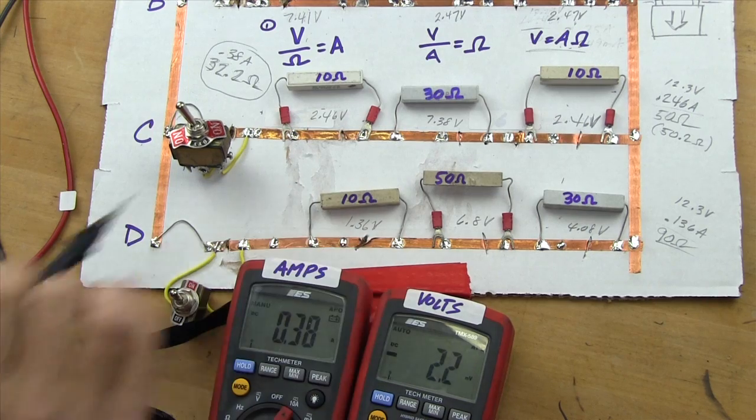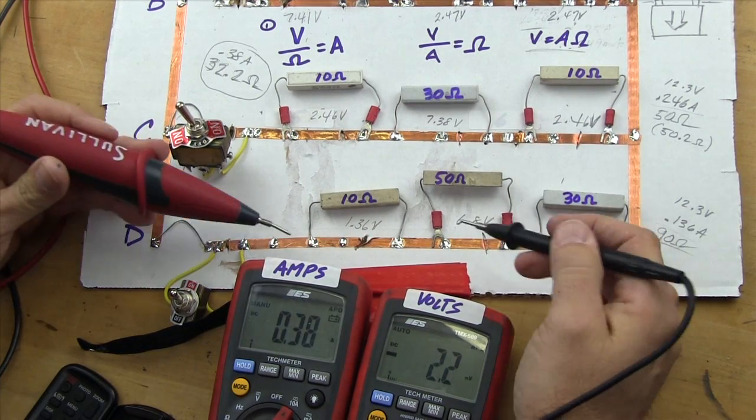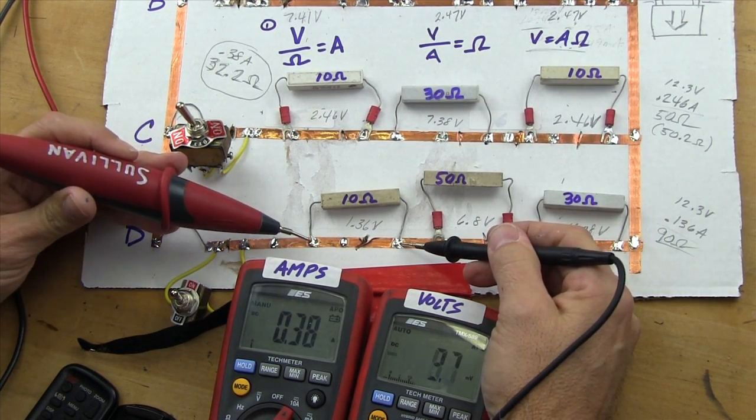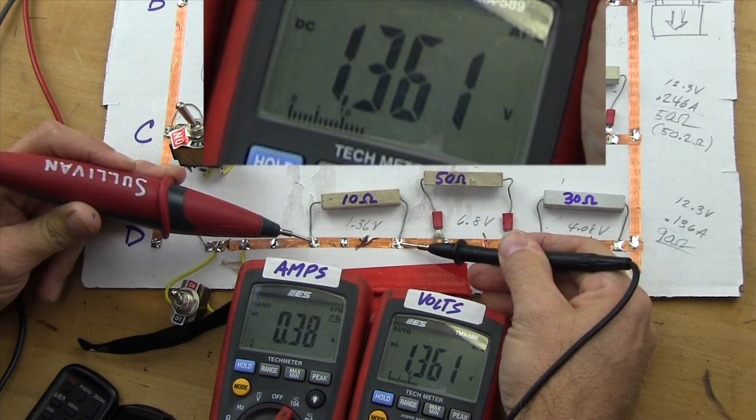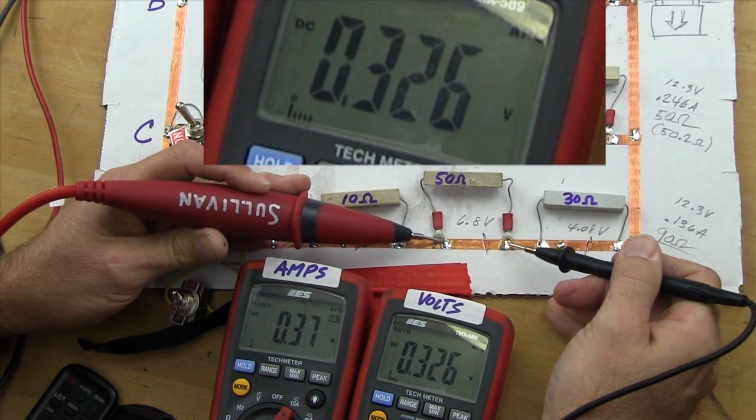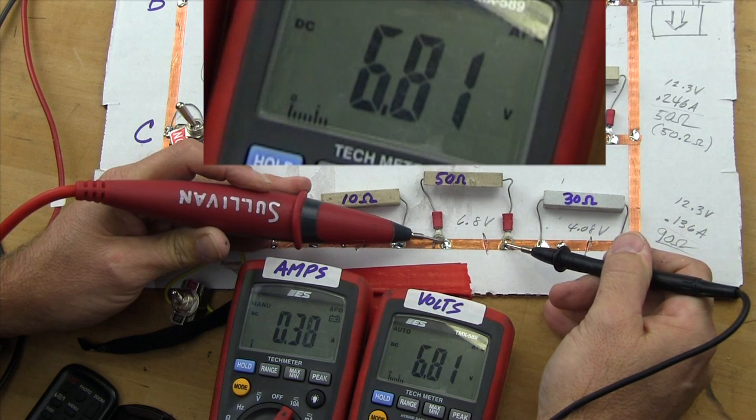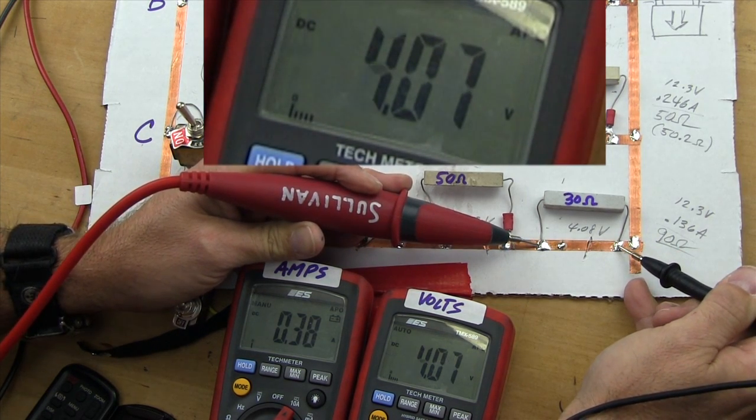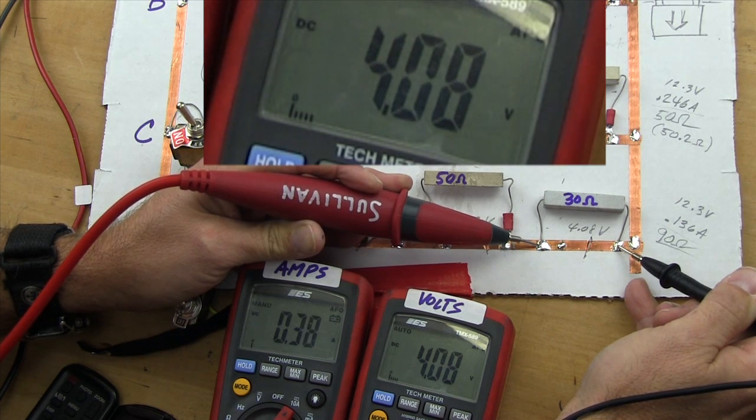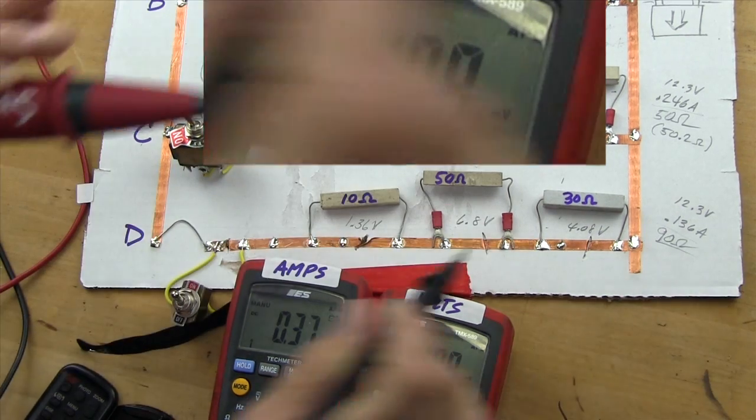Well, we got 0.136 here, or excuse me, 1.36 here, and we get 1.36 volts as expected. On the 50, we get 6.8 as expected. And for the 30, we get 4.07 or 4.08, wow, that's a good one, as expected.